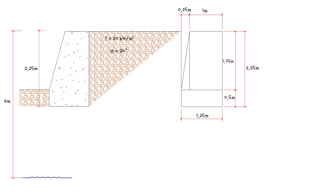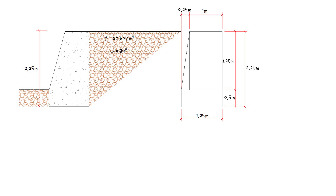However, how do the results change if the drainage behind the wall becomes blocked and water rises to the top of the wall? We will explain this in the next video, so stay tuned. How can we work out the maximum bearing pressure under the base of the wall? Also, how can we check the factor of safety against sliding? So, let's start.